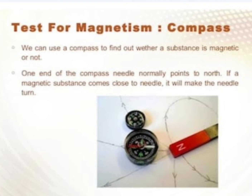Magnet के two poles होते हैं — one is North Pole, one is South Pole. North Pole, North Pole को repel करता है; North Pole, South Pole को attract करता है; और South Pole, South Pole को repel करता है। जब magnetic needle उसके पास आई, तो North Pole shift कर गया। Needle के इस साइड जो आपको white needle दिखाई दे रही है, वो South Pole है। Clear?